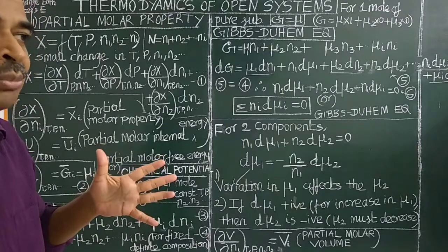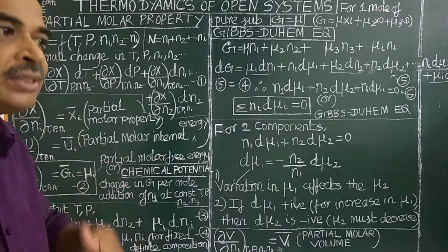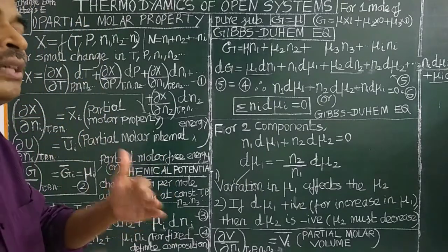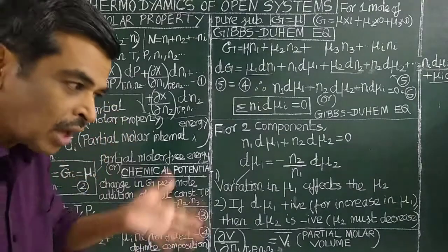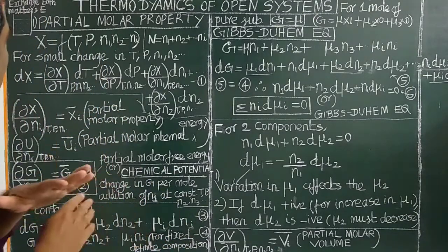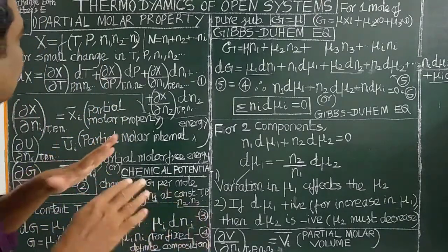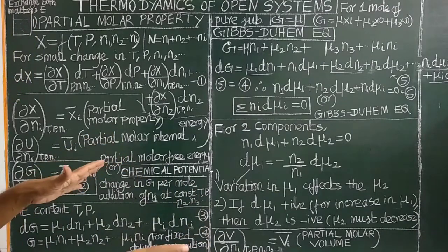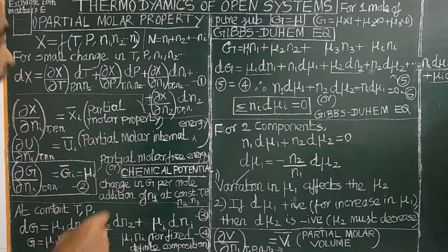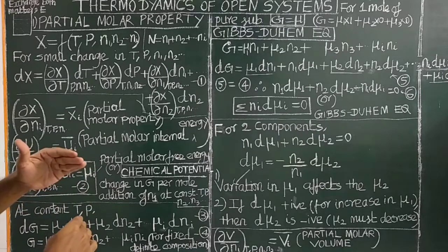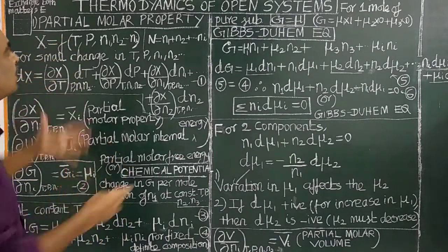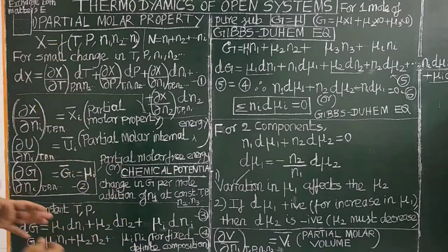An isolated system exchanges neither energy nor matter with the surroundings. So to recap: an open system exchanges both matter and energy with the surroundings.